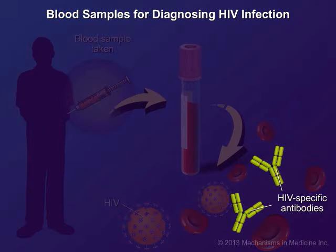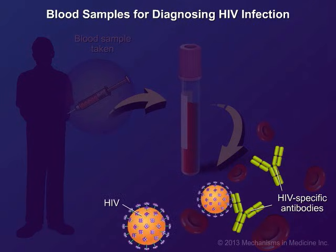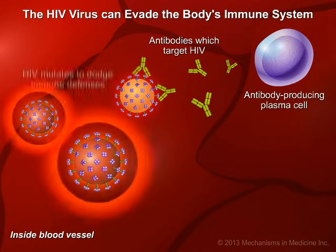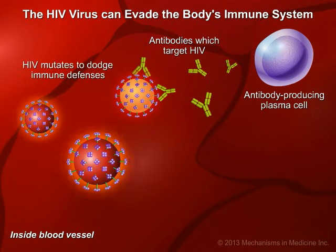Antibodies are special proteins produced by the body's immune system to fight infection when HIV enters the body. If a person has HIV-specific antibodies in their blood, it means they have been infected with HIV. Antibodies are the body's defense against infection. However, in the case of HIV infection, the HIV virus is very tricky and can easily change its form or mutate, evading the body's antibody defense.